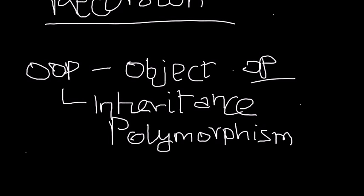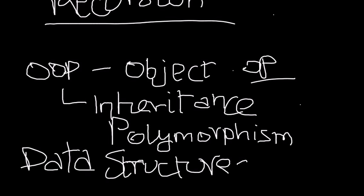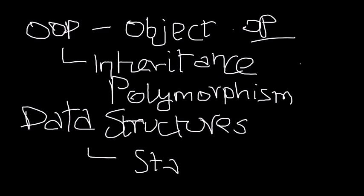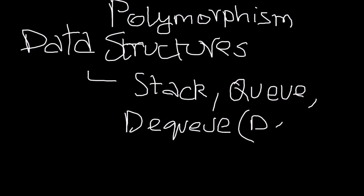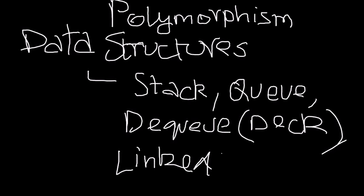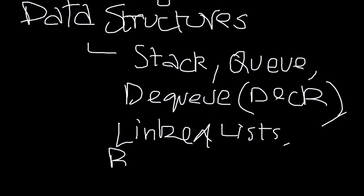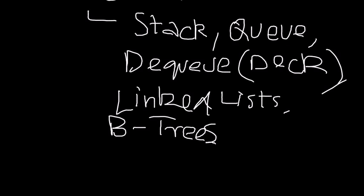And then you have my personal favorite topic, data structures. And under data structures you will have quite a few different types of data structures. You will have stacks, queues, you'll have deques - oh I'm sorry, it's pronounced deck, not dequeue, it's pronounced deck. Besides this I think we also have linked lists and binary trees. Binary - I'm just going to say B-trees for binary trees.